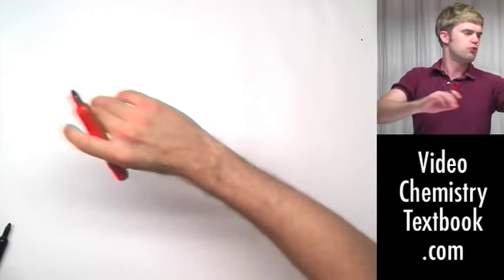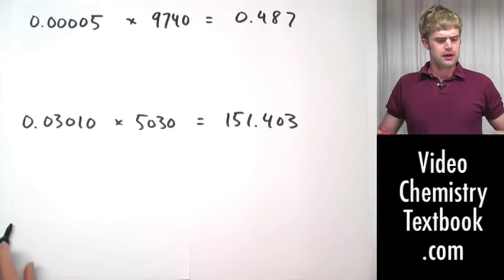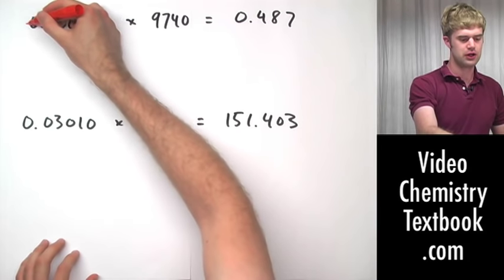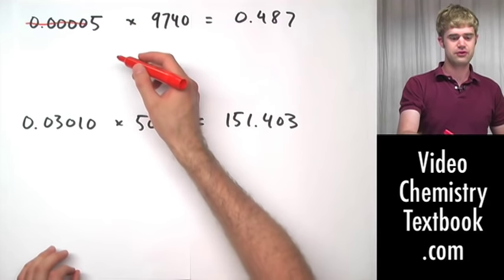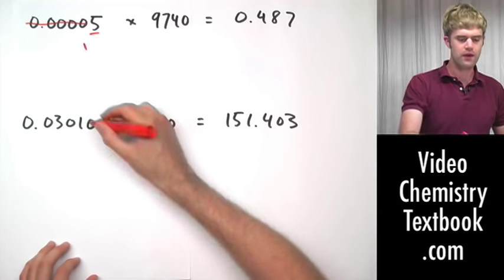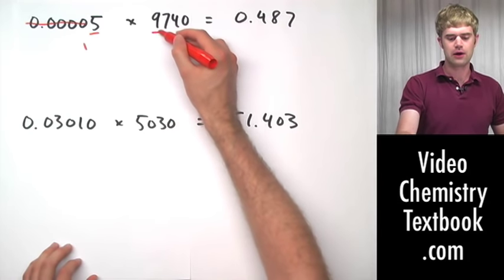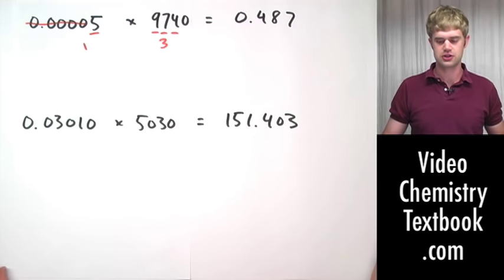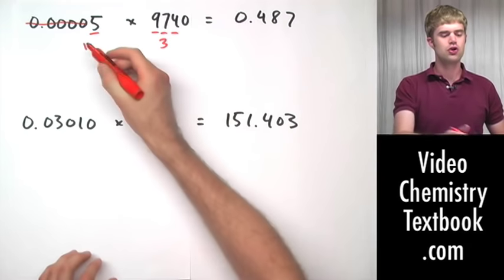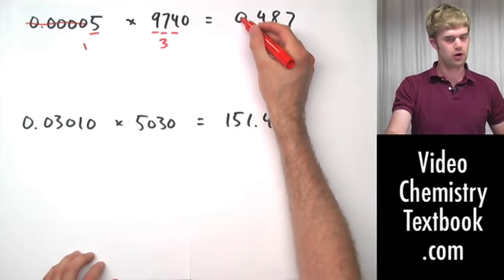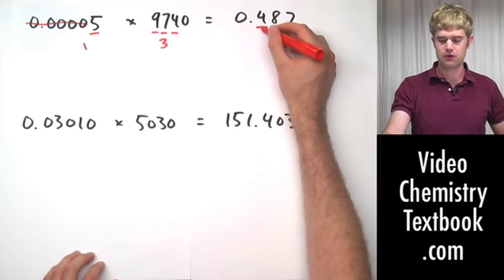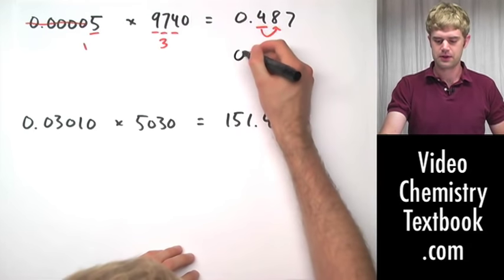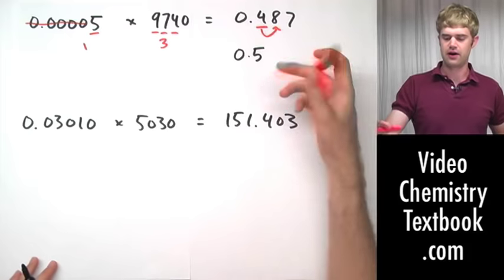Let's do two more. 0.0005 has only one significant digit because we can ignore all of the zeros to the left of a non-zero number. One there, and one, two, three here — ignoring the zero to the right because there is no decimal place — so three significant digits there. That means we're going to round our answer to only one significant digit. We don't have to worry about the zero; we're going to keep the four and look next door to see whether to round up or down. We round it up, so 0.5 is our final answer.